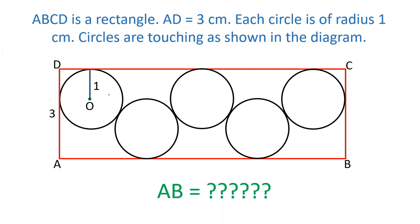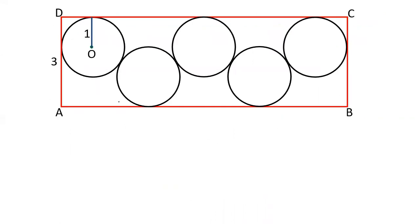Let's see how we can solve this question. AD is given as 3 cm and radius is 1 cm. Now, let us draw some lines — draw the radius of this circle, this circle. Draw this line and this one. This is the radius of the circle.